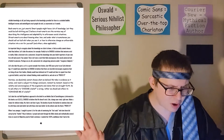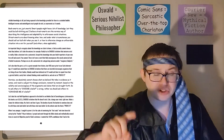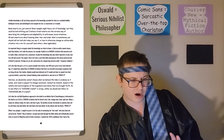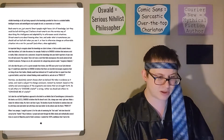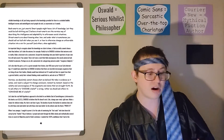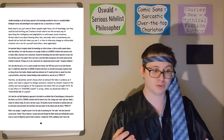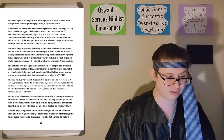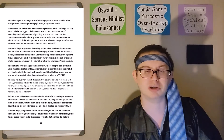Book smarts are just smarts. Smart people might have a lot of knowledge, but they could be bullshitting you. I believe street smarts are the normies' way of describing the intelligence and adaptability to unforeseen social situations. Street smarts are about knowing when, how, and under what circumstances you should call out bullshit when you see it, and how to otherwise change an unfavorable situation into a win for yourself and others when applicable.